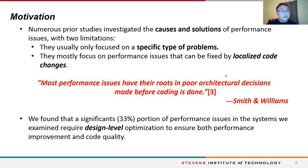Since performance issues are so important, there are many previous studies that investigated the root cause and resolutions of performance issues. However, these studies have two limitations. First, they usually focused on a specific type of performance issue — a comprehensive understanding of all types is still lacking. Also, previous works usually focused on performance issues fixable by a few lines of code revision. Smith and Williams pointed out that performance issues have their roots in poor architectural decisions before coding is done. Our observation of around 200 real-life performance issues shows that a significant portion require complicated design-level optimization instead of localized code revision. However, empirical study regarding design-level optimization is largely insufficient.